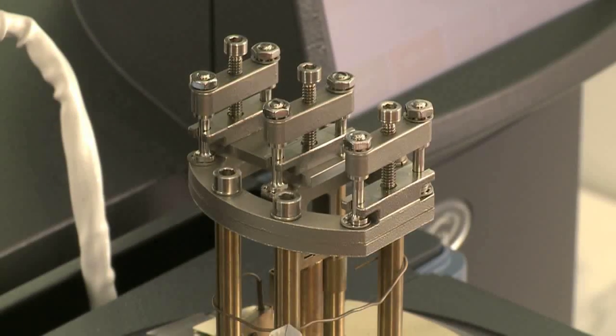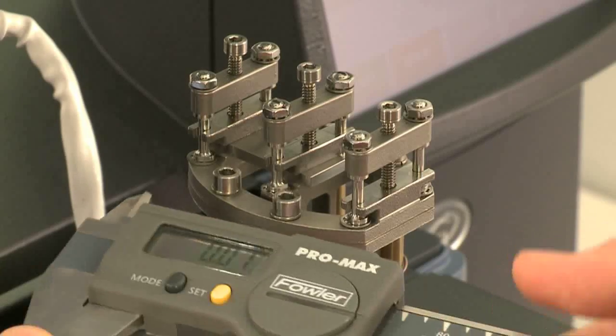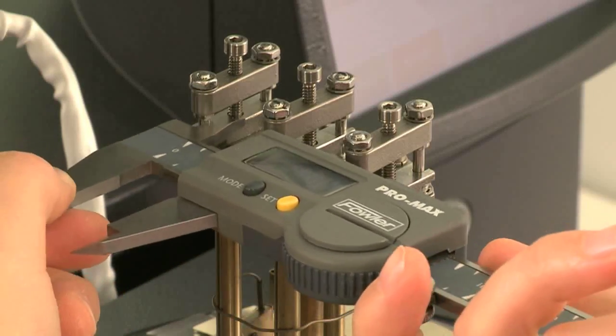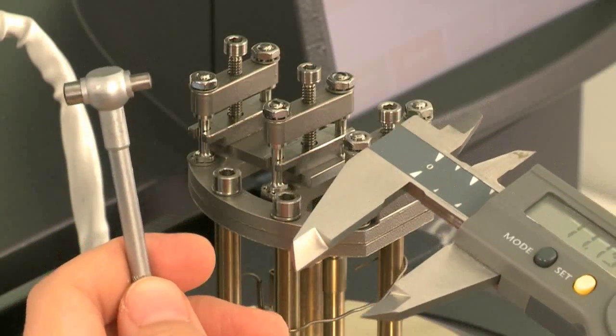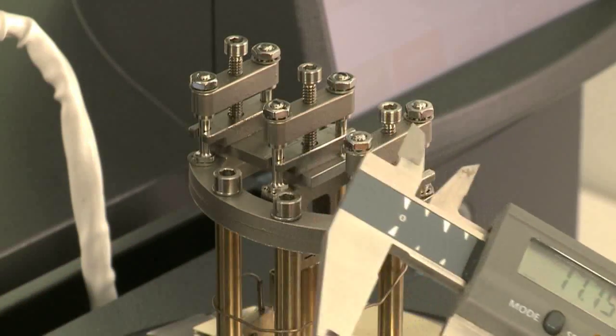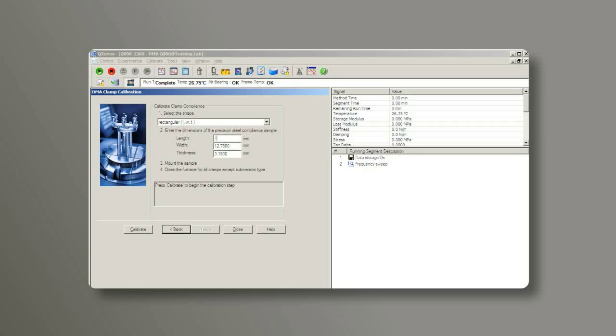Now we need to measure the length of the steel bar. You can either use a caliper or this lens gauge to measure the length of the bar. Enter the dimensions of the steel bar into the software, then click on calibrate.